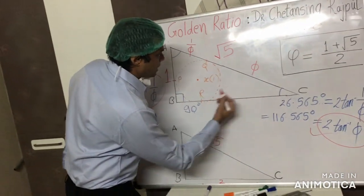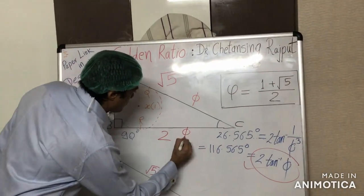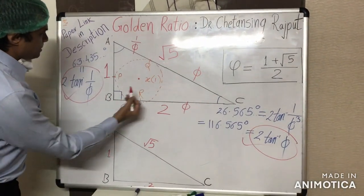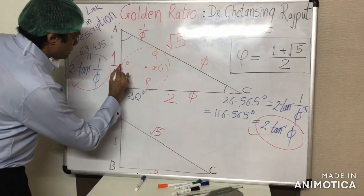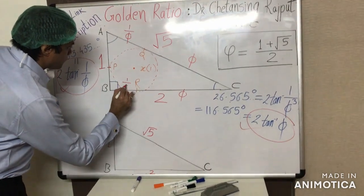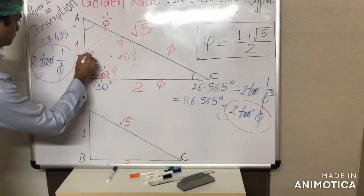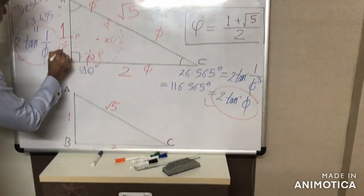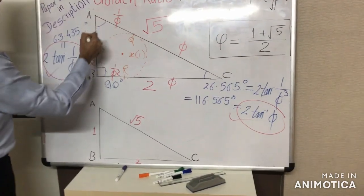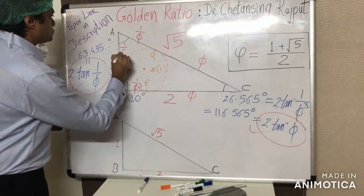Similarly, this length here RC, this is equal to phi, and this length here BR, this is equal to the in-radius of the triangle, which is 1 upon phi squared. Again, this PB is also 1 upon phi squared, and this distance AP, this is inverse of phi.